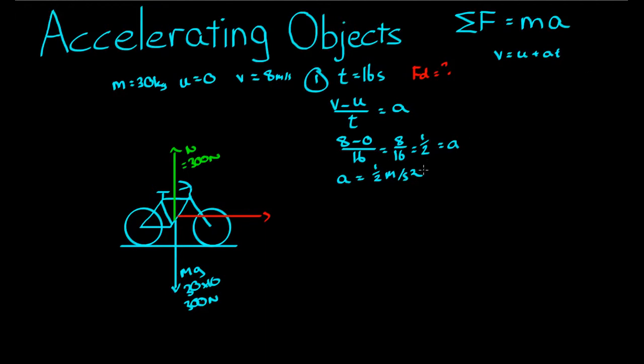It's all about this horizontal acceleration caused by that driving force. If we know that the acceleration of the bicycle is equal to a half meters per second squared, and we know that the net force is equal to the mass times the acceleration, then the net force of this bicycle is equal to ma, or 30 times a half, 15 newtons. Since there is only one force, this is in the horizontal direction by the way, since there is only one force which is causing that acceleration, the net force is equal to the driving force there. So the driving force is equal to 15 newtons.